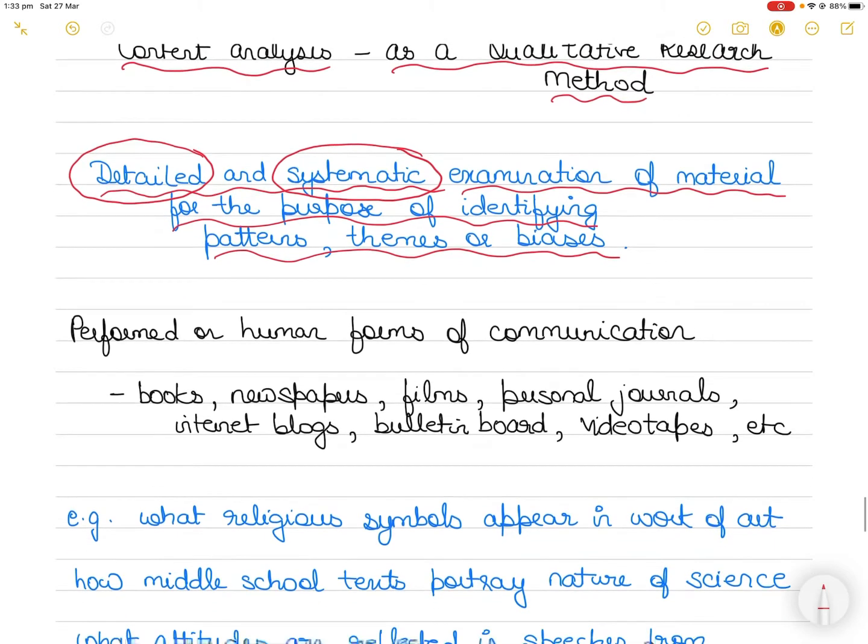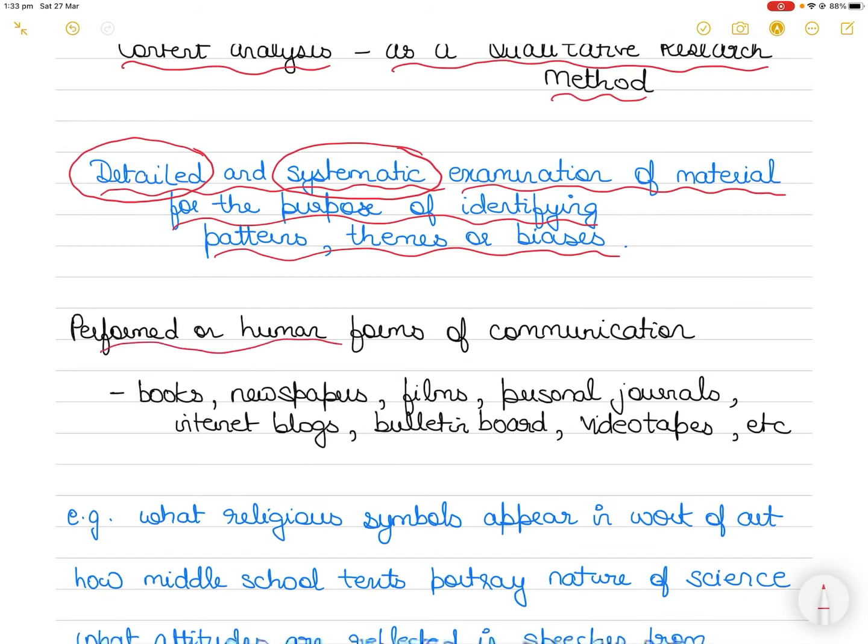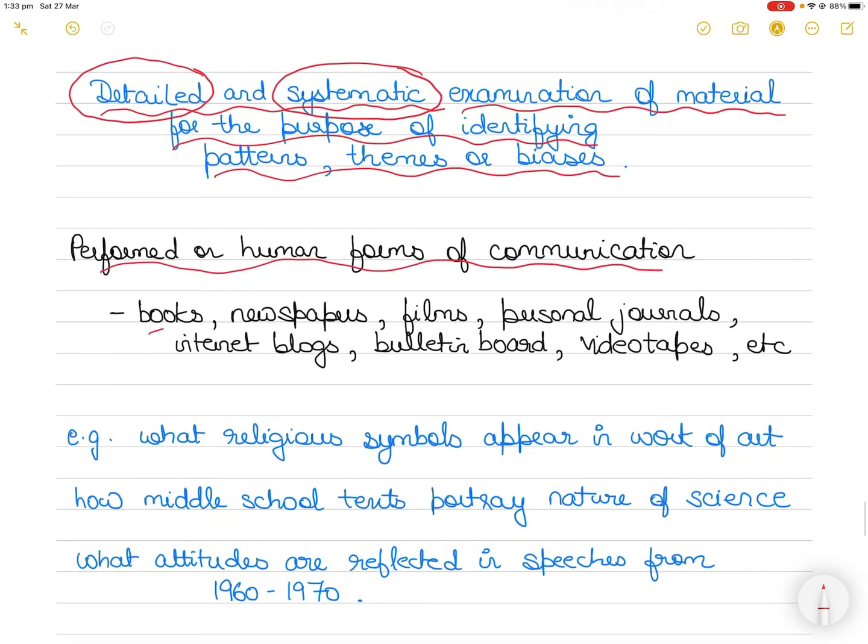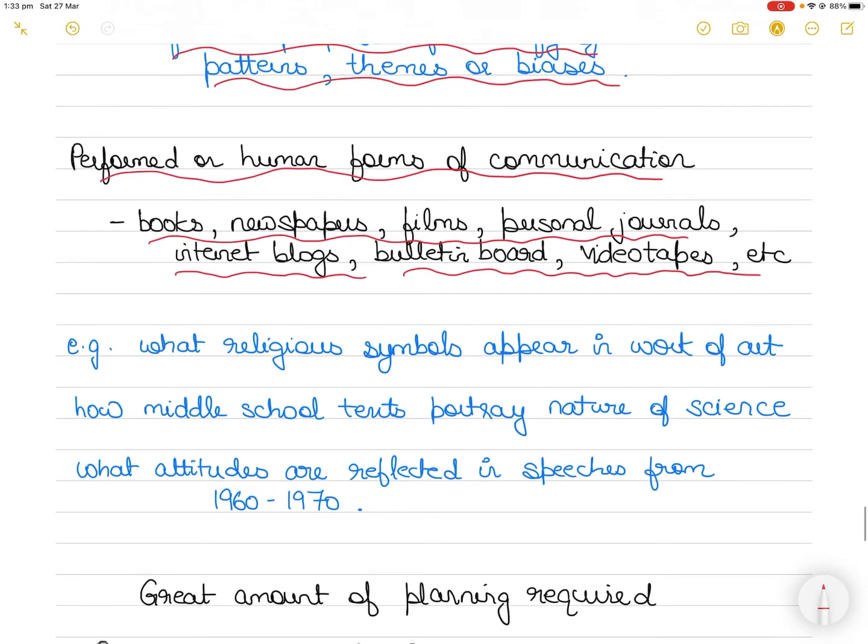Content analysis is typically performed on human forms of communication which includes books, newspapers, personal journals, legal documents, films, television, art, music, videotapes of human interaction, transcripts of conversation, internet blogs, and bulletin board entries.